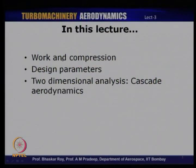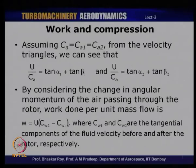We will start our discussion with the calculation of work for a compression process, then take up design parameters, and carry out a two-dimensional analysis of what is meant by a cascade and the aerodynamics of cascade flows. In the previous lecture, we drew a velocity triangle across a stage of a compressor, expressing all velocity components: the absolute velocity, relative velocity, blade speed, tangential components, and axial component of velocities. Using that discussion, let us now carry out analysis of the flow across a stage and estimate the pressure ratio.